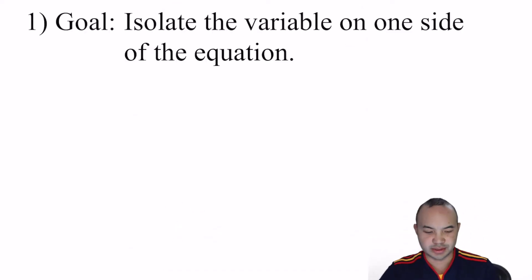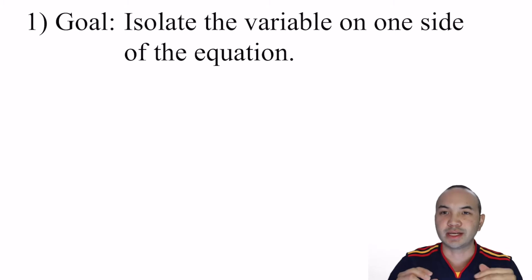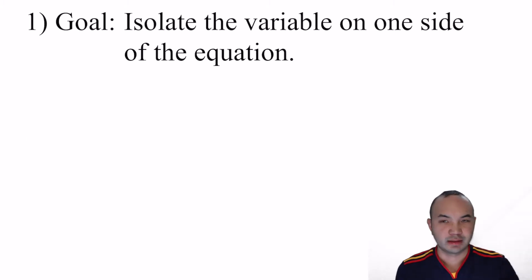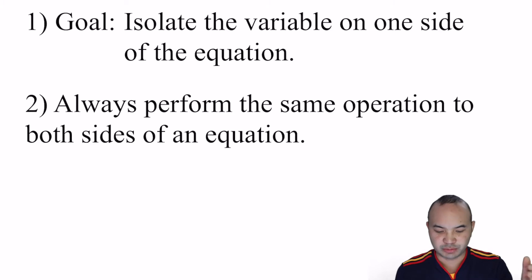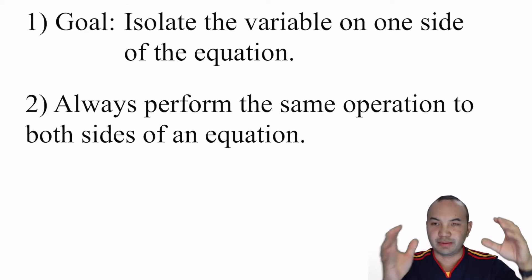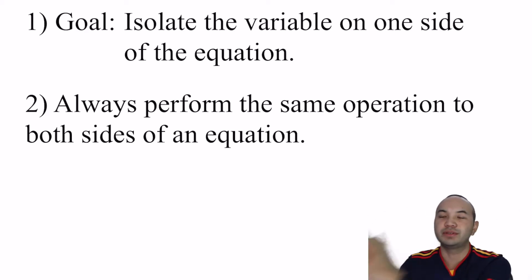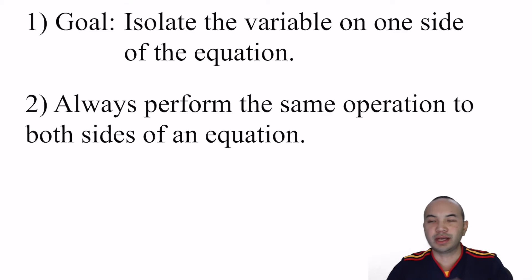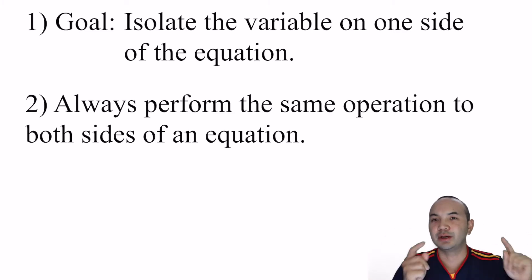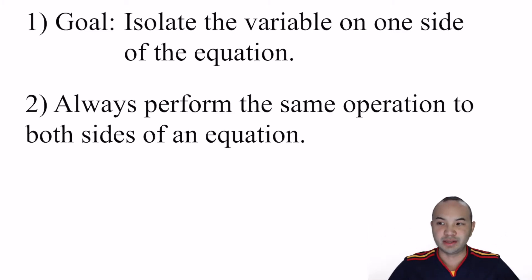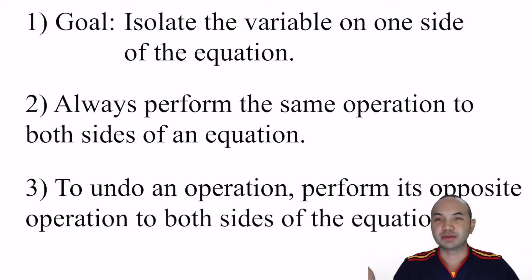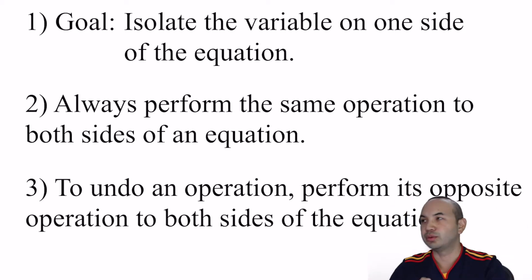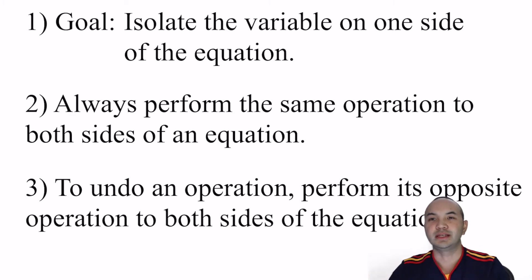So, rules for transforming equations: the goal is to isolate the variable on one side — isolate means you want it by itself. You always perform the same operation to both sides of the equation. If I'm going to subtract 3 from one side, I have to do it to the other side too. To undo an operation, perform its opposite operation on both sides. So X plus 3 equals 7 — the opposite of plus 3 is minus 3.